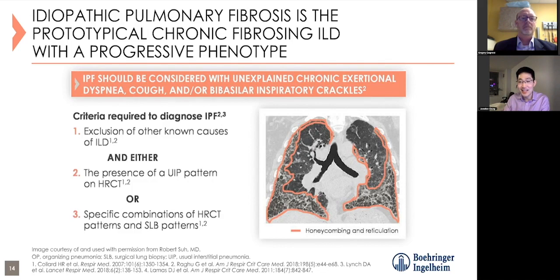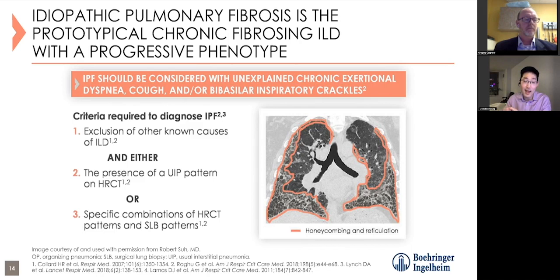How does one diagnose idiopathic pulmonary fibrosis? The first and most important step is a detailed history and physical, trying to find a cause for ILD. After that, it's HRCT. If there's no known cause for ILD and you have a UIP or sometimes probable UIP pattern—especially with high pretest probability for IPF—you've essentially made the diagnosis of IPF. If you don't have a high-confidence UIP pattern on CT, then you consider surgical lung biopsy, BAL, and an MDD to determine the best diagnosis.